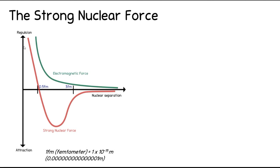That's quite hard to visualise, so there's a graph here. We've got nuclear separation along the x-axis — that's the distance particles are apart from each other in the nucleus. As you can see, in the range from about 0.5 to 3 femtometers, the strong nuclear force is very attractive. As soon as we go smaller than this range towards zero, it becomes very repulsive. And as soon as we go outside this range, it becomes very weak.